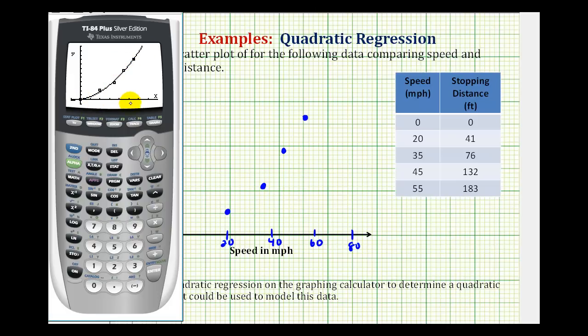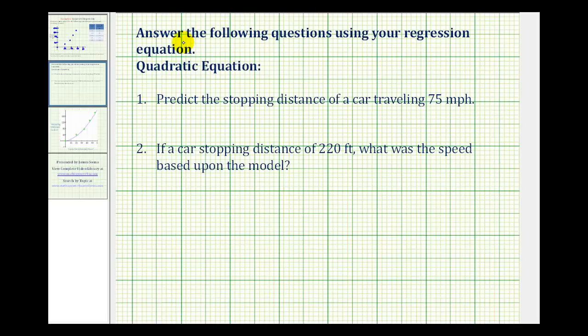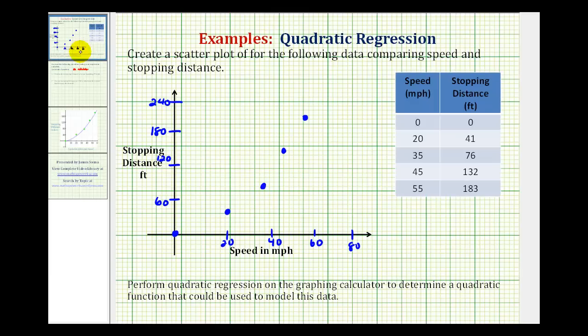Now let's take a look at a couple questions. And we will answer these from the calculator. So for the quadratic equation, we'll go ahead and just say on calculator. So first we want to predict the stopping distance of a car traveling 75 miles per hour. Remember the speed would be the x coordinate. So we want to evaluate the function when x is equal to 75.